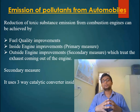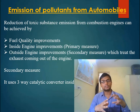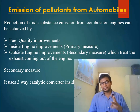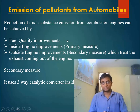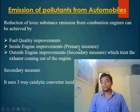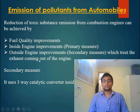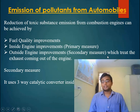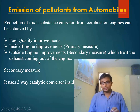How can we reduce the toxic substances emitting from combustion engines? There are three possible ways. One is fuel quality improvements, which is the main topic of our discussion. Apart from this, automobile manufacturers also do improvements in their engines — this is called the primary measure. The secondary measure is basically treating the exhaust which is coming out of the engine.